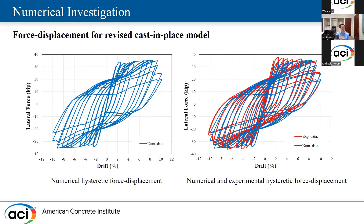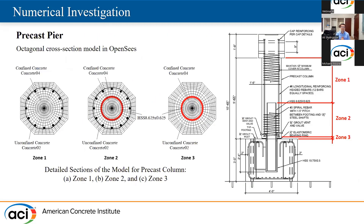Let me show you the results of the numerical analysis. In the numerical result, you can see that there are some locations where the force dropped — that's exactly where the rebar broke. The peaks are almost the same as the experimental results. For the precast, we did exactly the same, with the only difference being in the section. We divided the column into three different zones: zone one is the same as cast-in-place with rebar and concrete; zone two is where the pipe plays a role, so we have pipe, concrete, and rebar; and zone three, which is just two inches but really important, has only pipe and concrete.